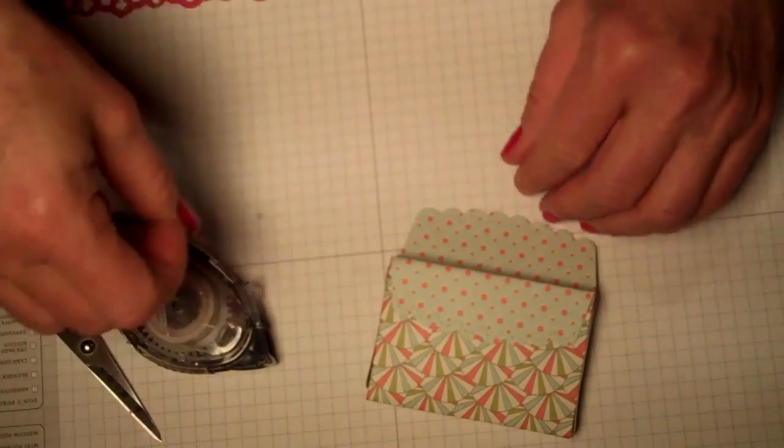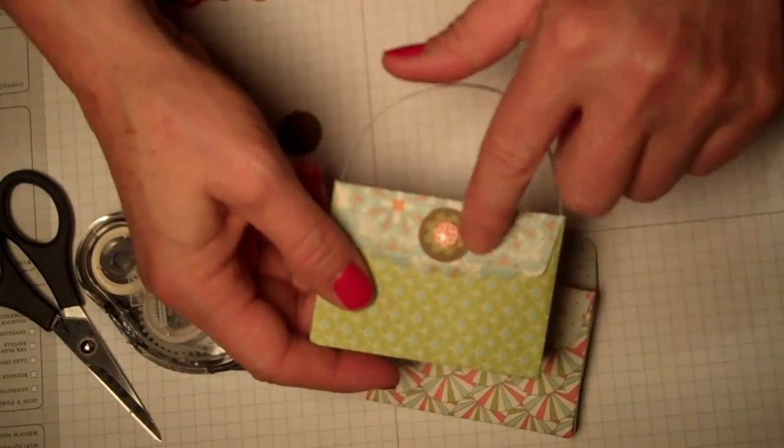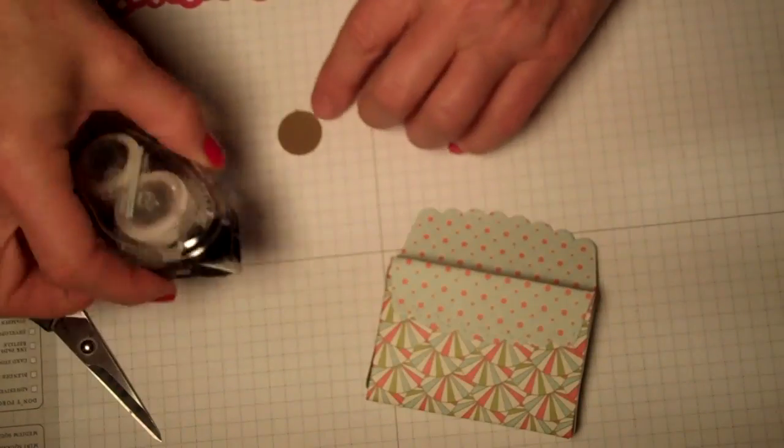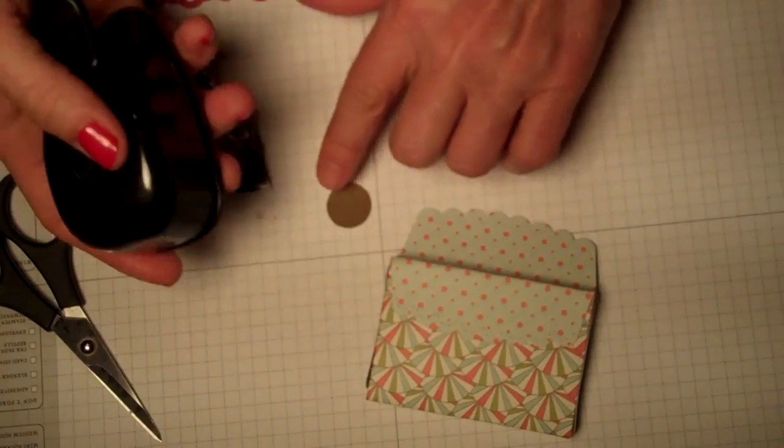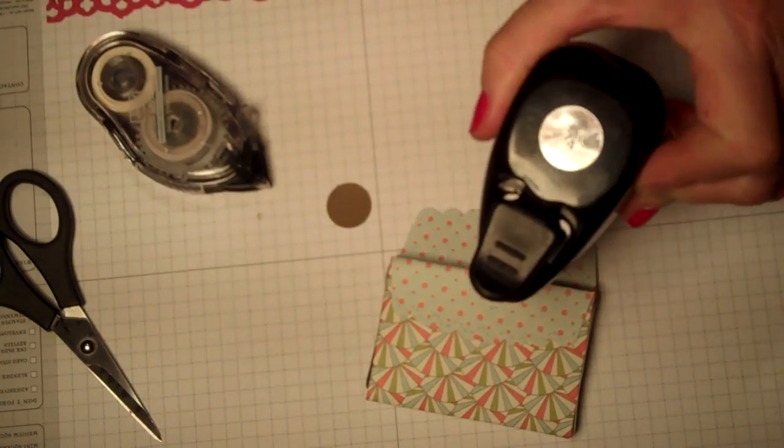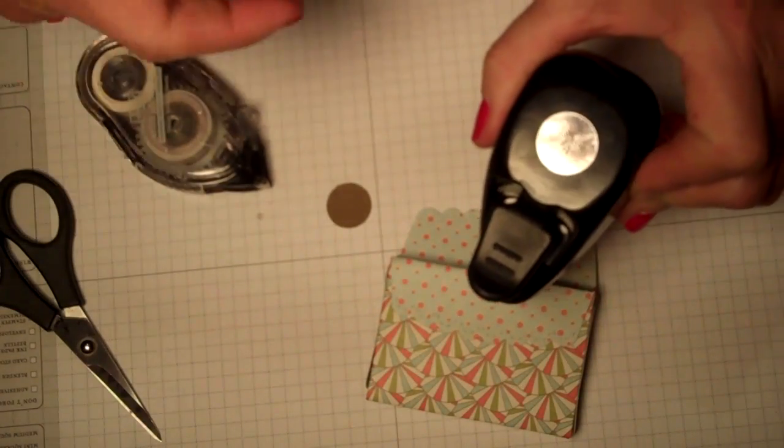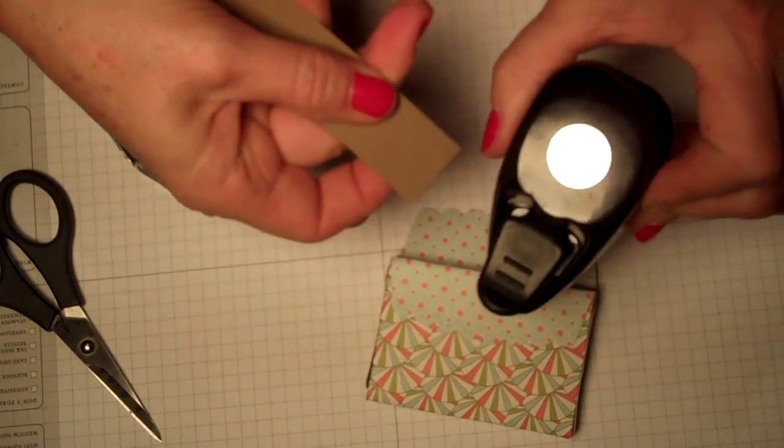The front one you're gonna leave open because we're gonna make this little design here. Okay, so I'm gonna take, and I have punched previously with three-quarter circle punch, and I used the soft suede and I punched a circle.